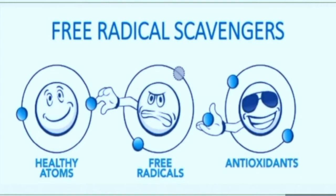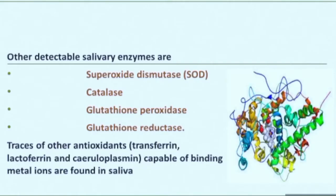Free radicals steal electrons from stable molecules, making those molecules less stable. Antioxidants add an electron to stabilize free radicals, thus preventing cell damage. Other detectable salivary enzymes are superoxide dismutase, catalase, glutathione peroxidase, and glutathione reductase.